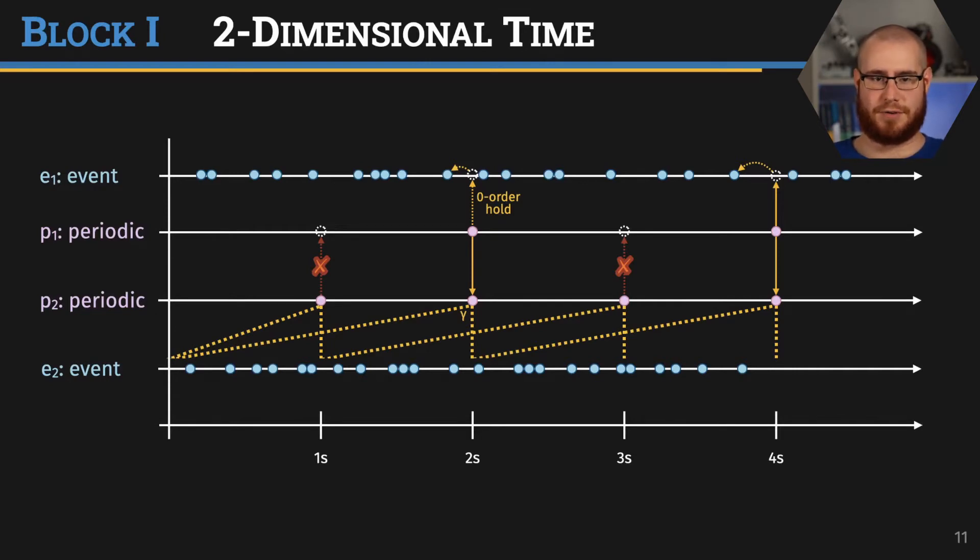The other way around, however, does not work. If P2 wants to access P1 synchronously, this does not necessarily work out because only half of the time, every other computation, P1 also gets a new value. Thus, half of the computations would fail, and this is just not allowed in RTLola.